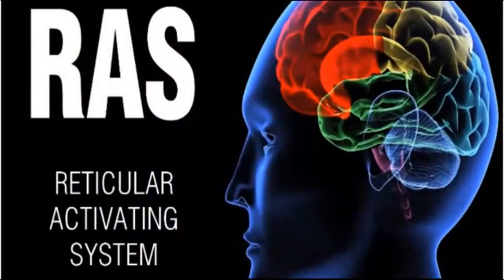Science has found something called the reticular activating system — the RAS. It's about the size of your pinky in the back of the brain, and it's the filter — it decides what's going to come into your mind. When I planted the seed of the Acura car, now I'm seeing it everywhere because the RAS is letting in data to support what I think is important. Same thing — if someone calls your name in a crowd, you hear it. That's the reticular activating system.